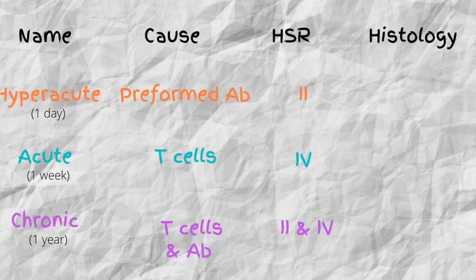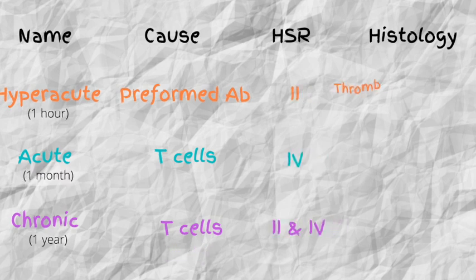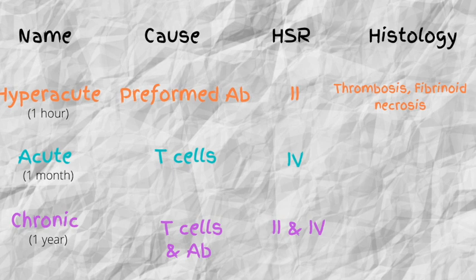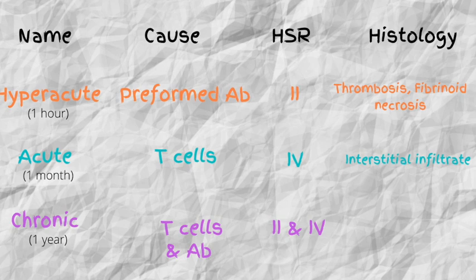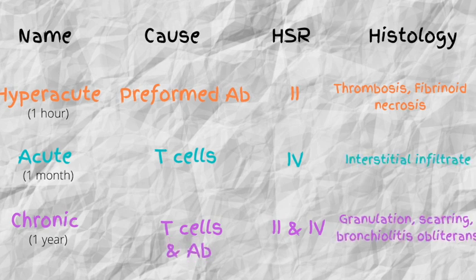For hyper-acute transplant rejections, you'll see thrombosis and fibrinoid necrosis — extremely high yield. For acute transplant rejections, you'll see lymphocytic infiltrates as well as neutrophilic infiltrates, so think infiltrates for acute. For chronic transplant rejection, you'll see granulation, scarring, vascular wall thickening, and luminal narrowing, such as bronchiolitis obliterans.